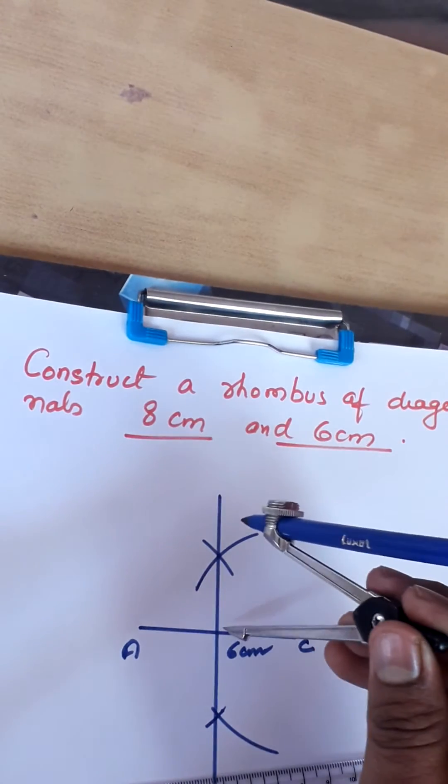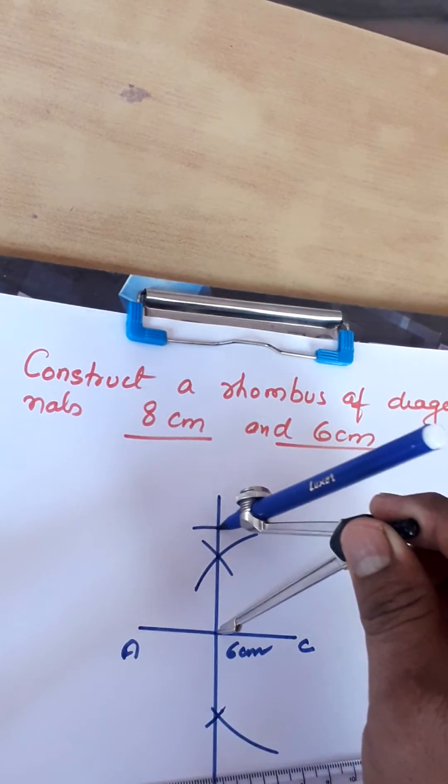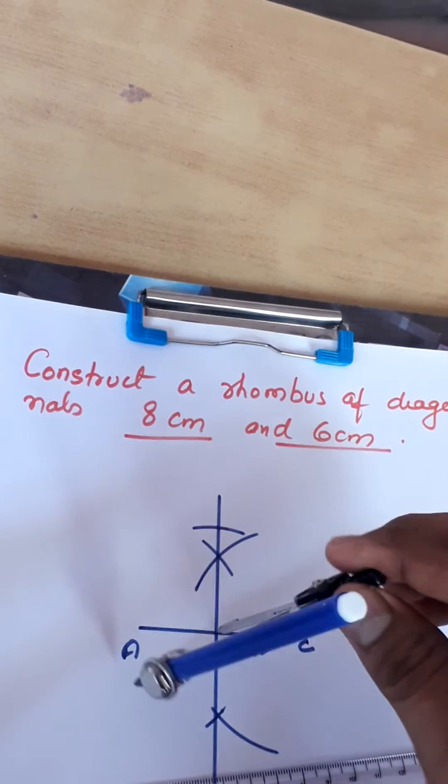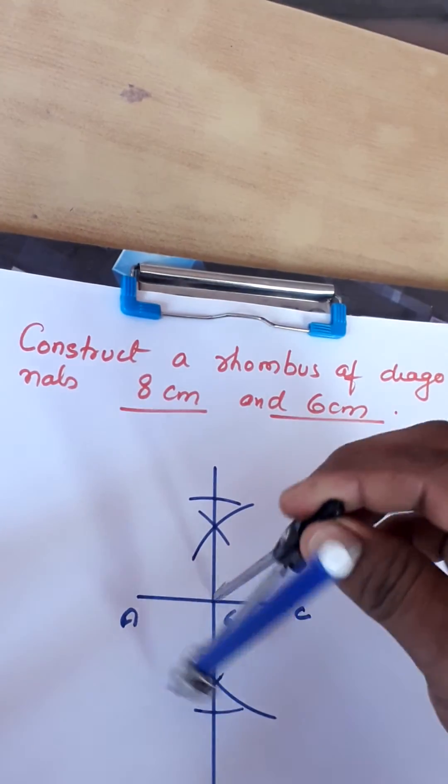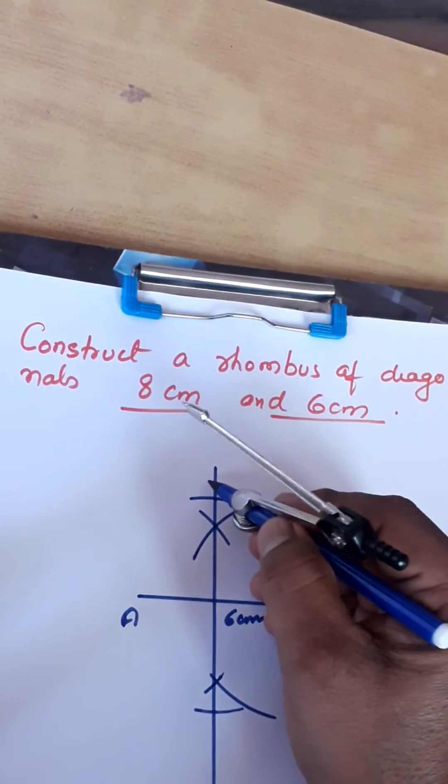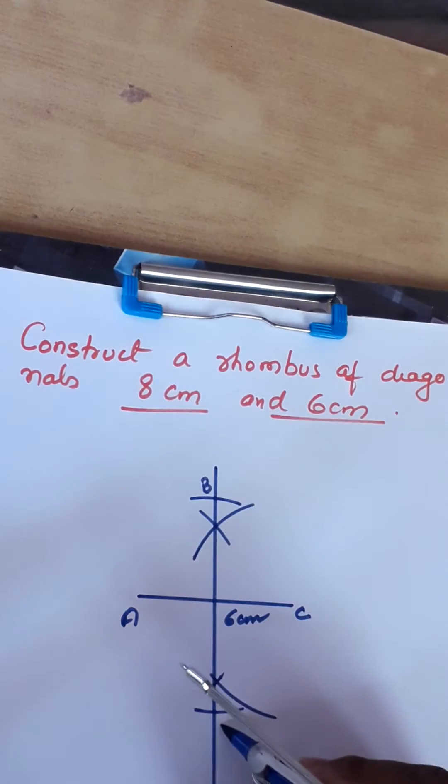From this point of intersection we cut an arc of radius 4 centimeter and another here also an arc of radius 4 centimeter. We now name these points as B and D.